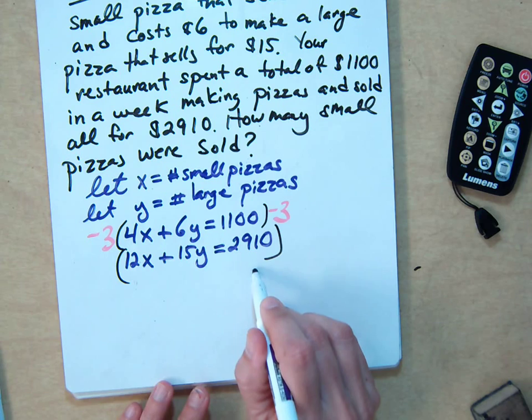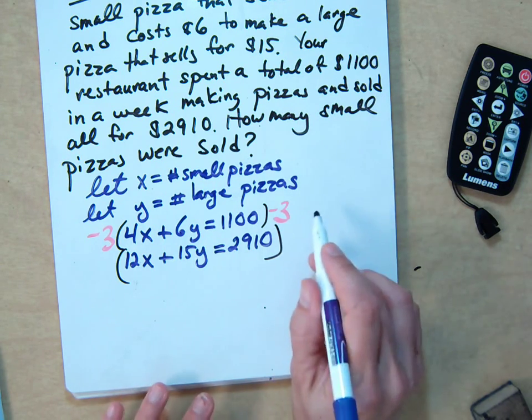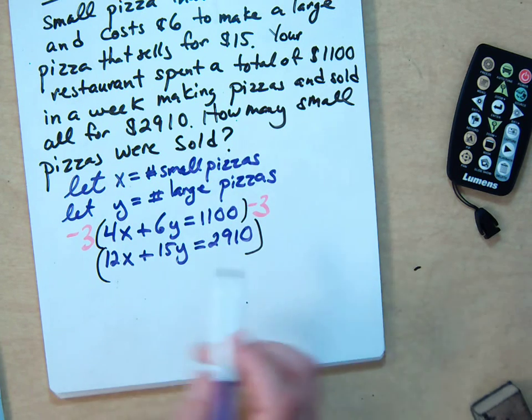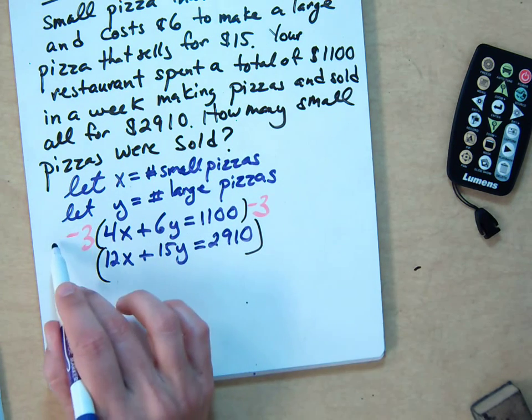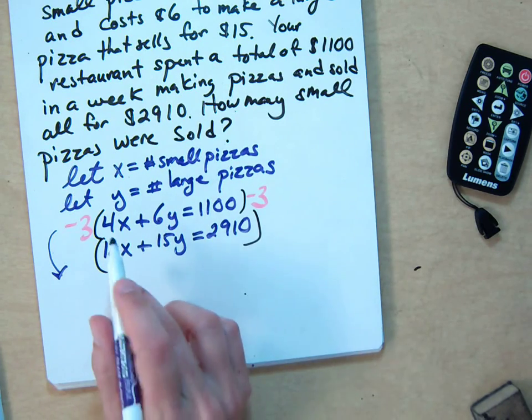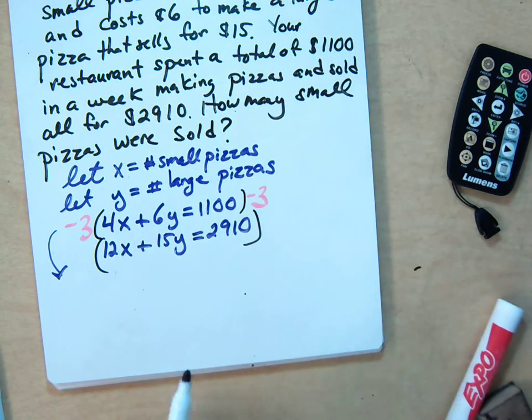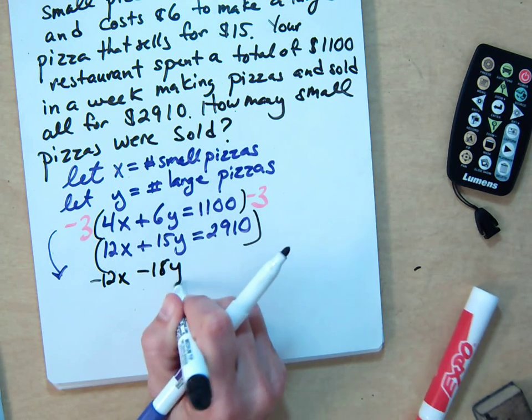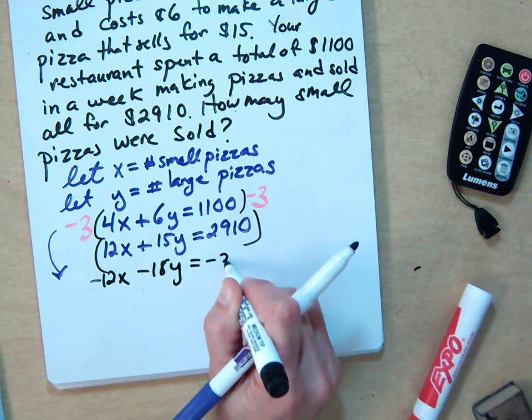So, do you want to work, should we work this out? Or should we just, okay. So if you multiply this by negative 3, I'm going to rewrite the equation below. You get negative 12x minus 18y equals negative 3,300.